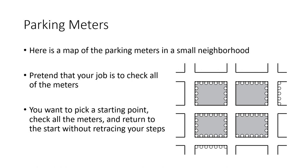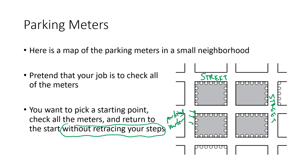In this example, we have a map of a neighborhood. Each of these lanes here are streets, and the little dots are parking meters — each dot represents a parking meter. Our job is to check all of the parking meters in this neighborhood. We want to pick a place to start, pick an intersection to park our car or start walking, and walk up and down the streets checking meters as we go. The important part is that we want to do this efficiently — without retracing our steps. We want to have a plan so we don't end up walking back and forth along streets we've already done.